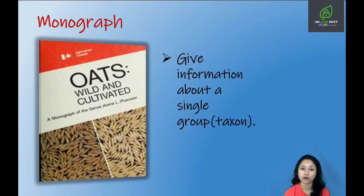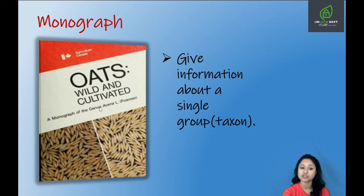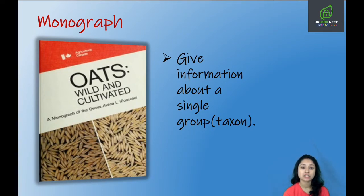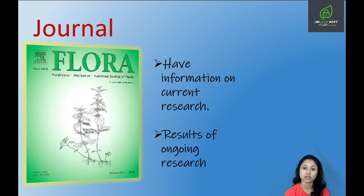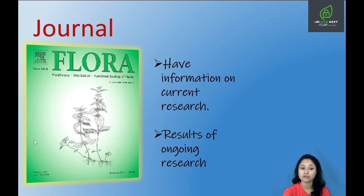Next is monograph. Mono means single, so is taxonomic aid mein humme information milti hai single group ki, single taxon ki. One example is the monograph of genus Avena. Scientists working on the nutritional status of Avena publish their research and results in our next taxonomic aid — the journal. Journal mein basically humme information milti hai on current research along with the results of ongoing research.